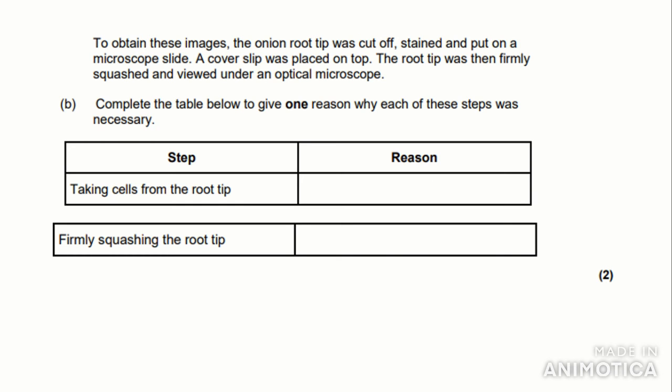Now here is the last question. To obtain these images, the onion root tip was cut off, stained, and put on a microscope slide. A cover slip was placed on top. The root tip was then firmly squashed and viewed under an optical microscope. So you can highlight optical microscope. Complete the table given below to give one reason why each of these steps was necessary. So let's look at the first step here. Taking cells from the root tip. Now if you think about it, the root tip is the part that is mostly exposed to the elements, so is more likely to be damaged. So to repair the damage, mitosis must occur. So we can write mitosis occurs the most in this region. So if we look at the next step, firmly squashing the root tip. This makes the specimen thin so the light can penetrate through the specimen so it can be seen in the image. So we can write to make the tissue more thin.